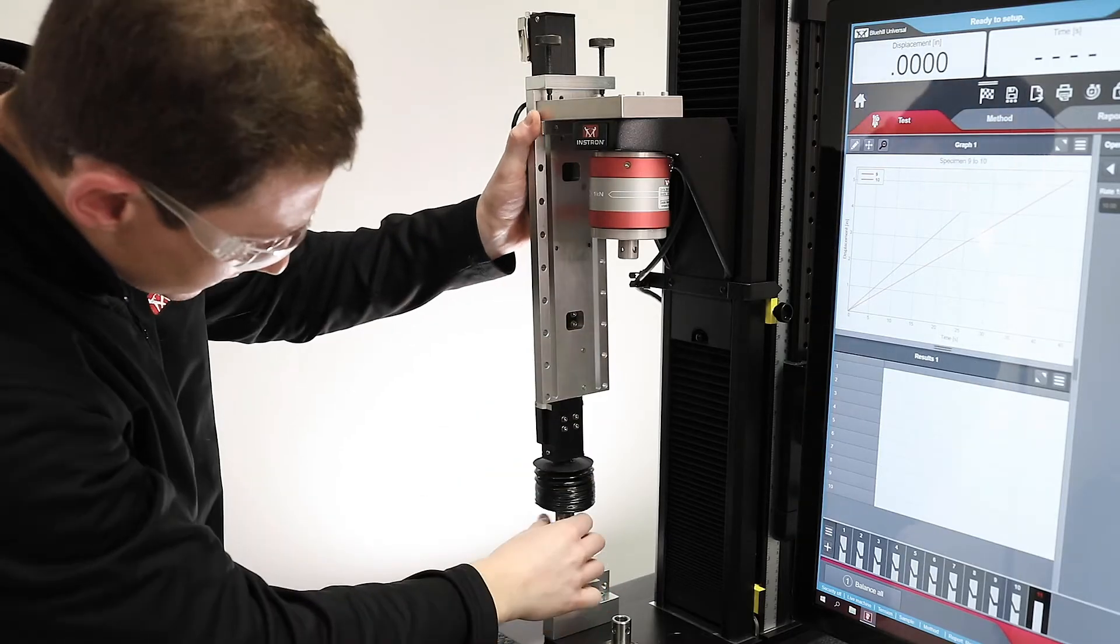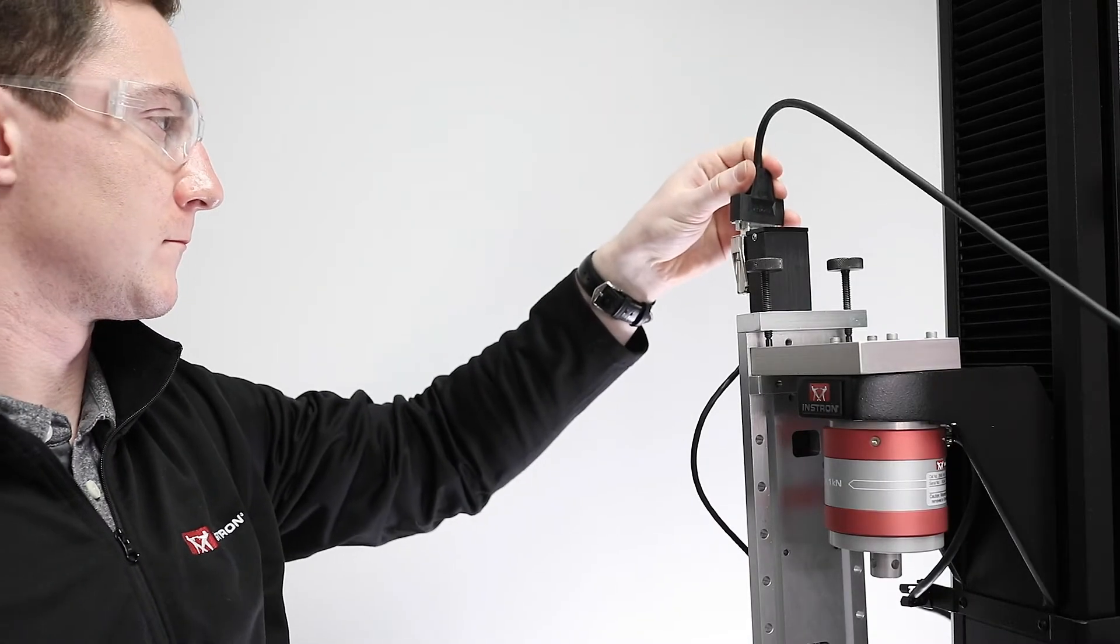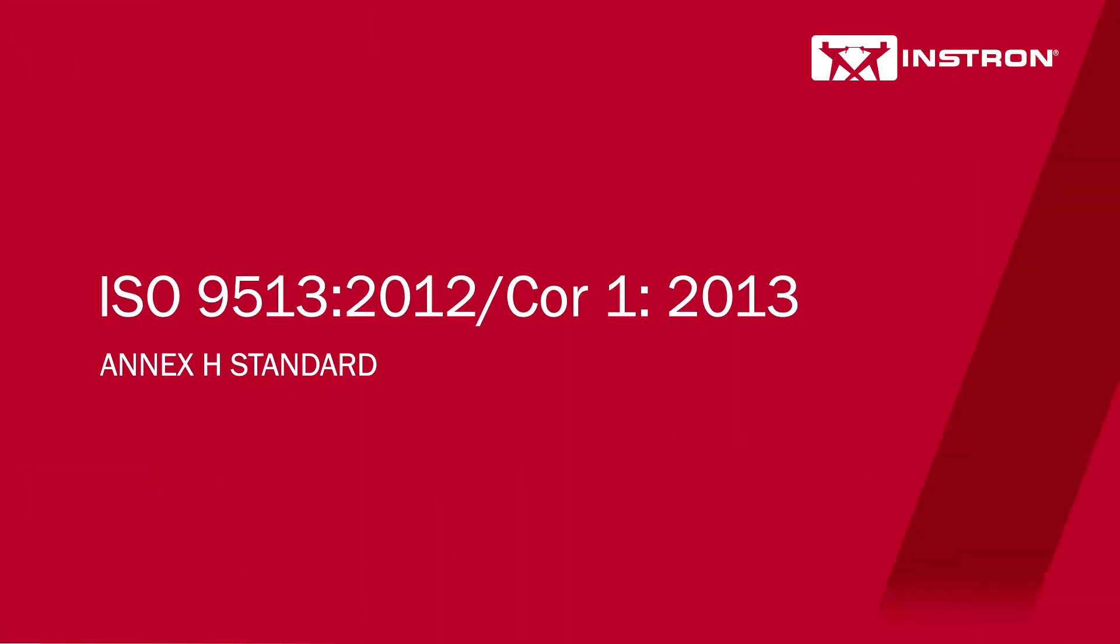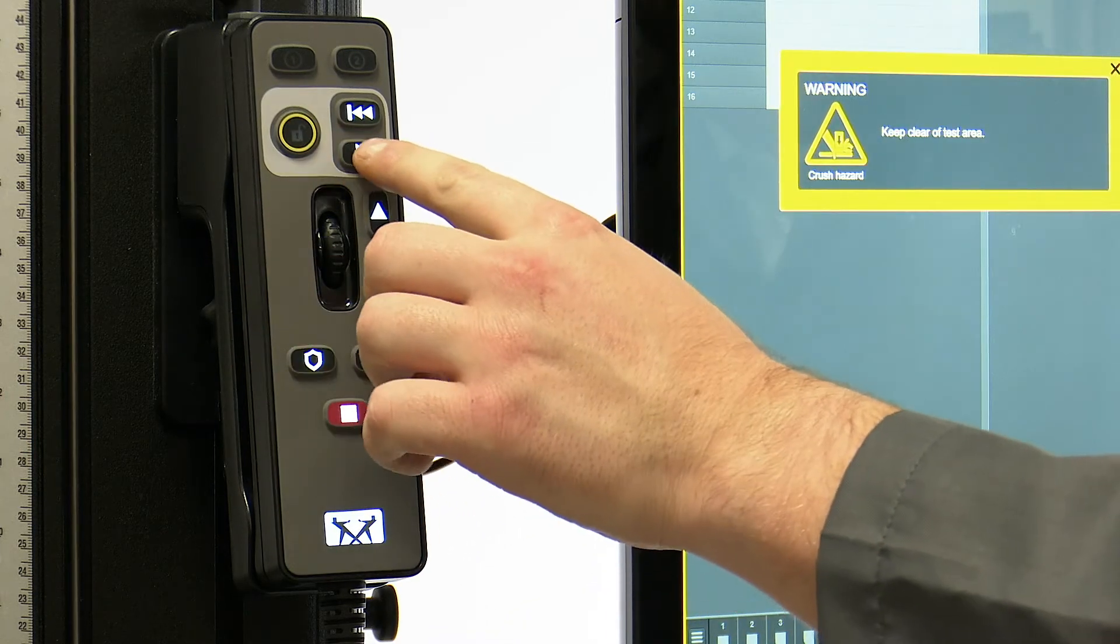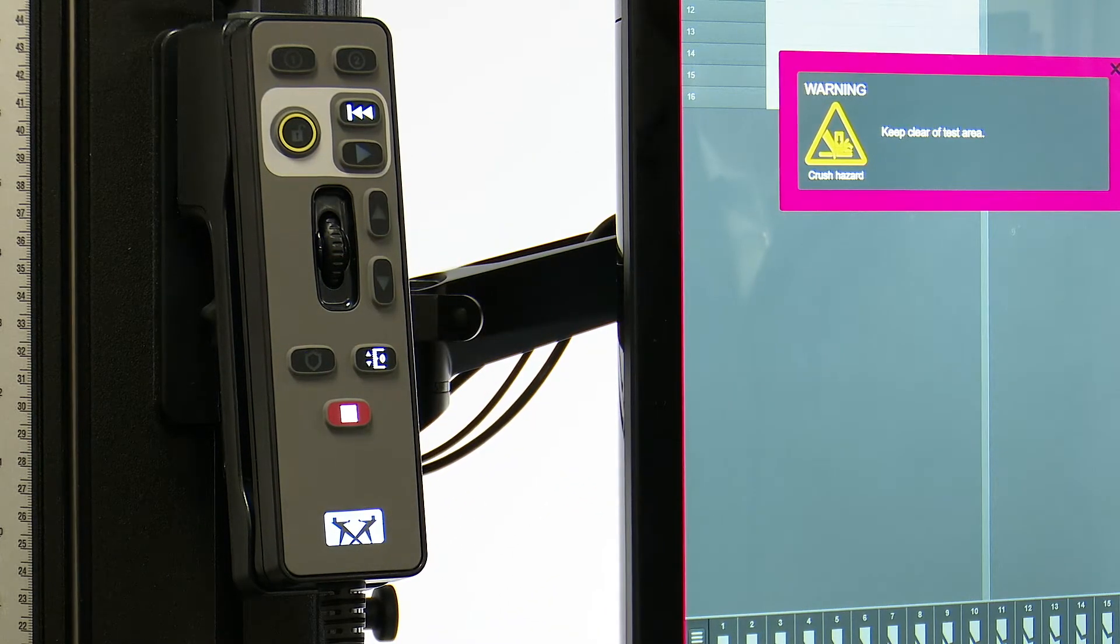For displacement verification we can verify to ASTM E2309 or ISO 9513 2012-Core 1-2013 Annex H standards and for speed verification we can verify to ASTM E2658 standard.